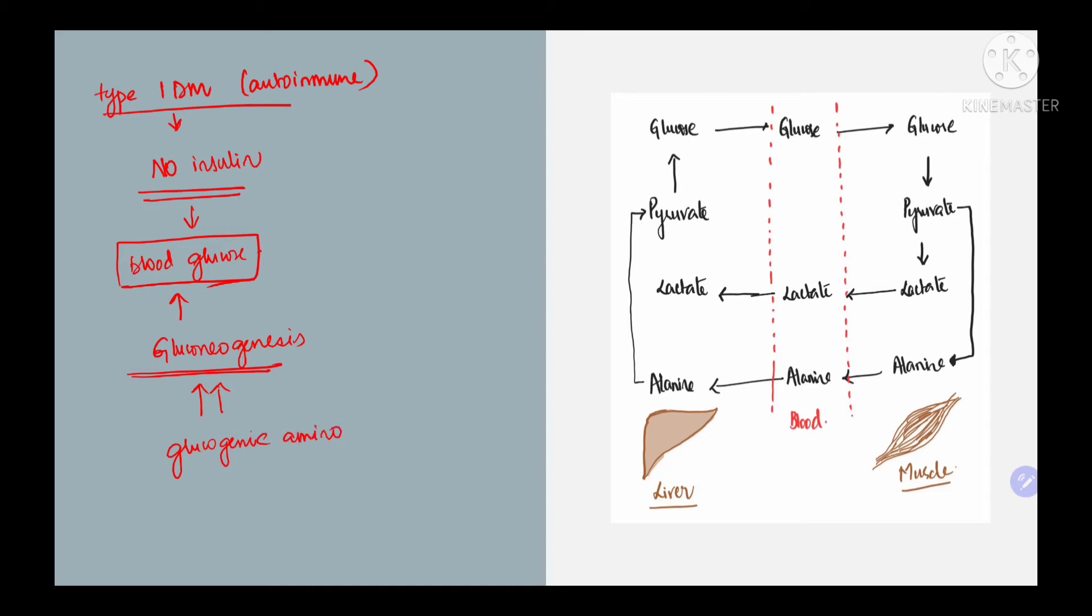These gluconeogenic amino acids mainly come from protein catabolism, specifically from muscle degradation. Of all the glucogenic amino acids, alanine is one of the most important amino acids that operates through a cycle called the glucose-alanine cycle or Cahill cycle.